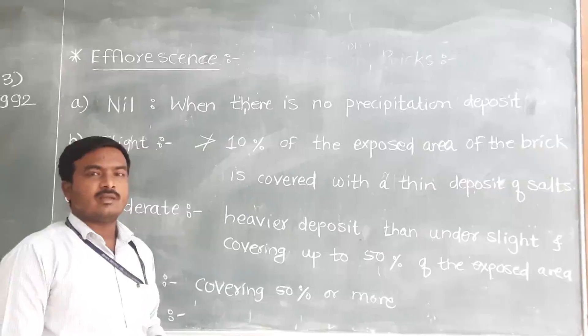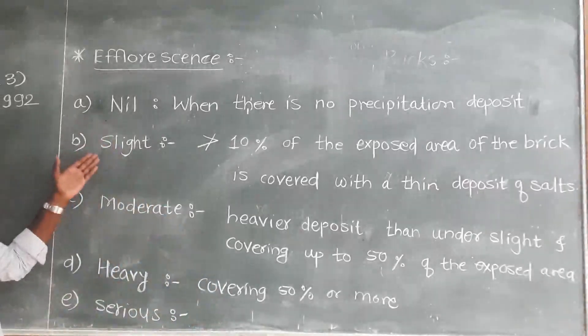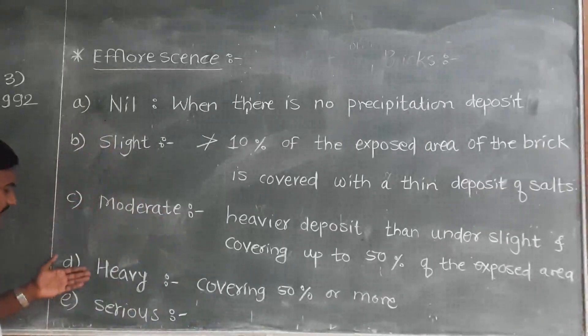The efflorescence on brick is categorized as nil, slight, moderate, heavy, and serious.